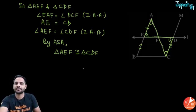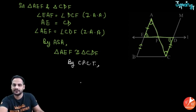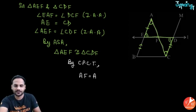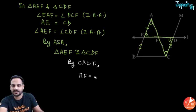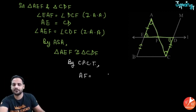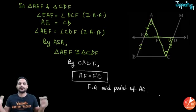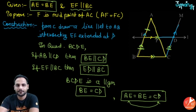By CPCT, AF = FC. Therefore F is the midpoint of AC — proved. The proofs are similar; in the converse we just go in the opposite direction from the midpoint theorem proof.